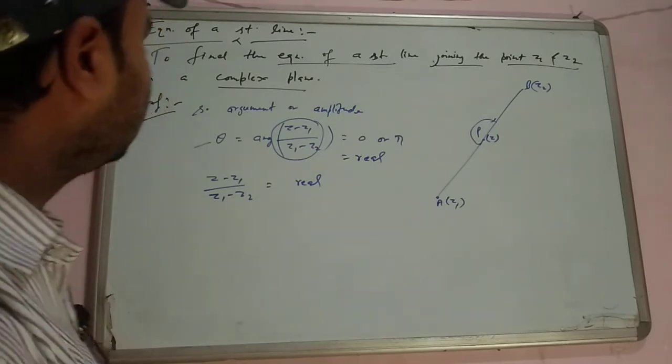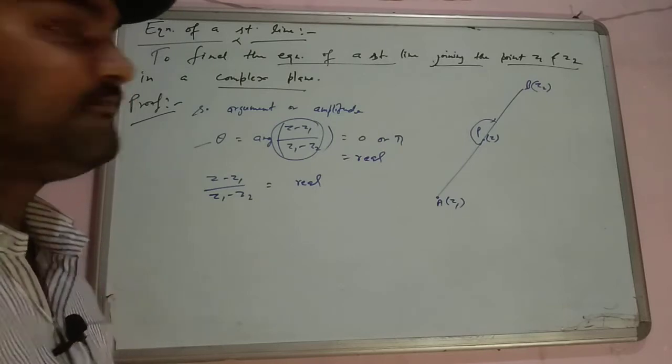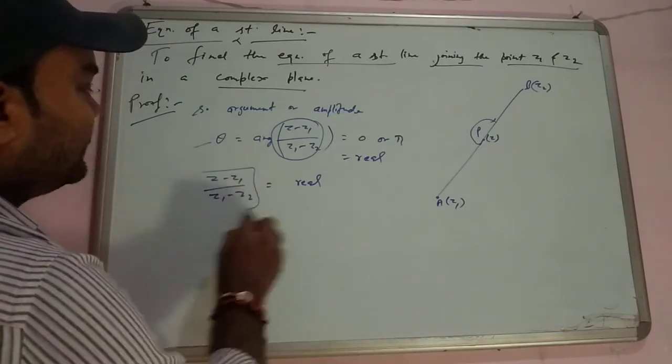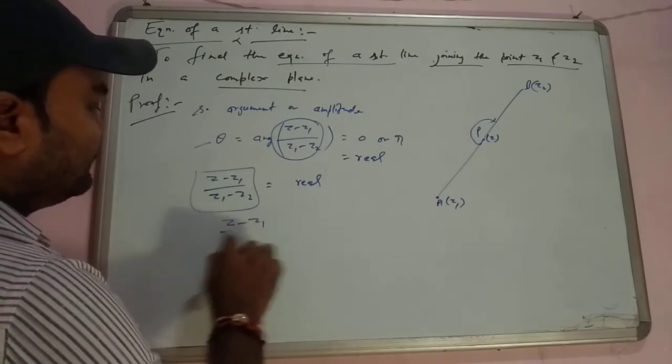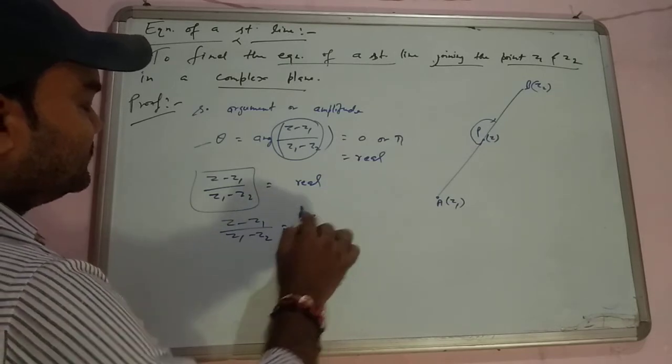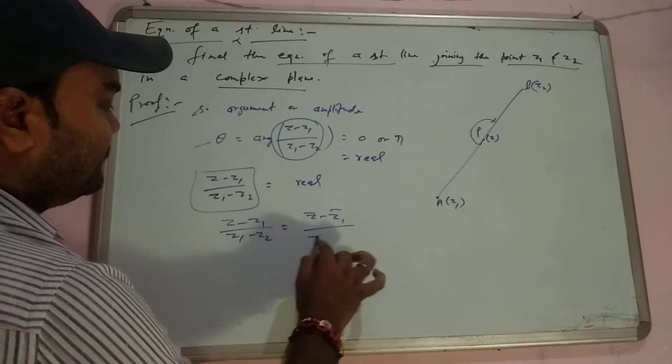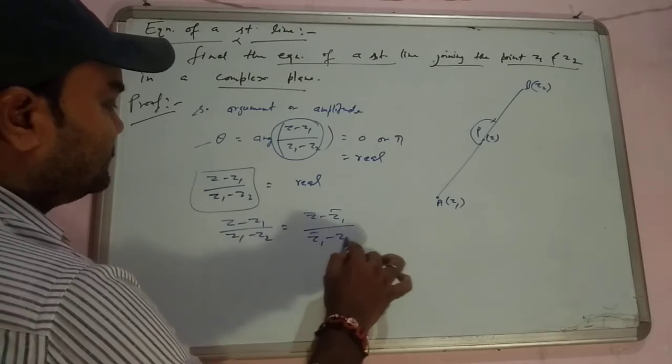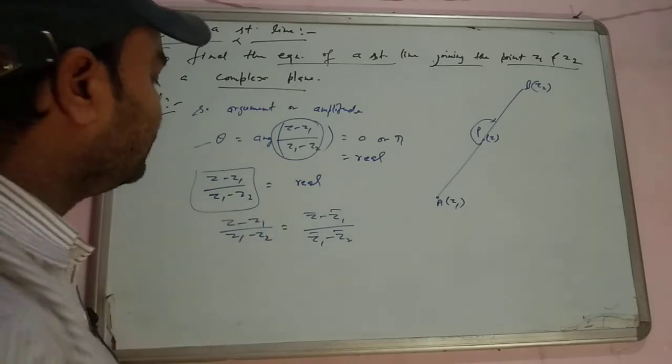So we have to make a theorem: if this is real, then the quantity is real, then the conjugate is the same. Means z minus z1 upon z1 minus z2 equals its conjugate, z bar minus z1 bar upon z1 bar minus z2 bar. The conjugate notation.